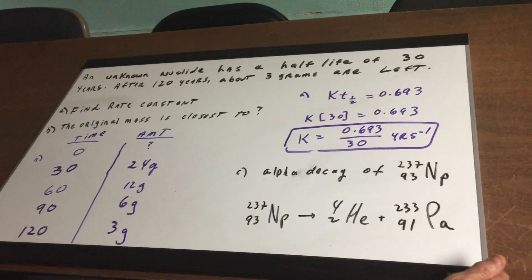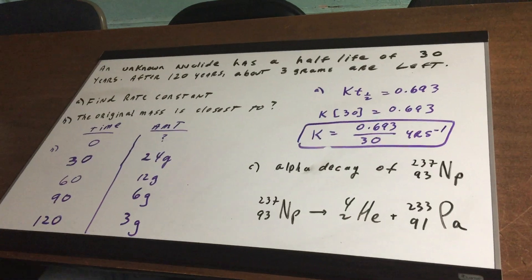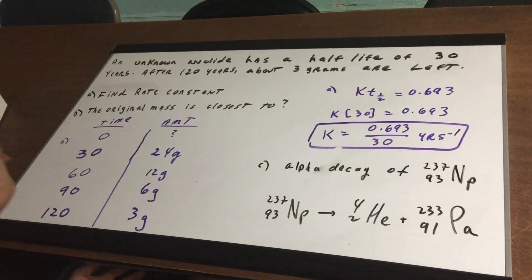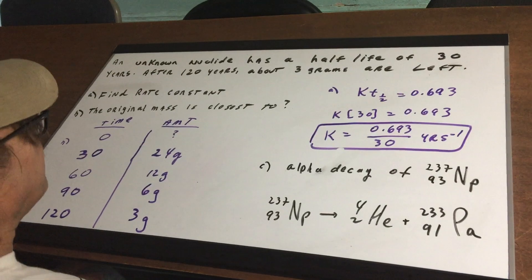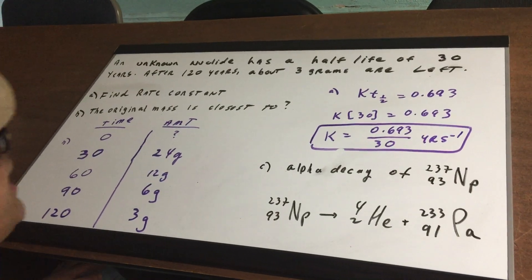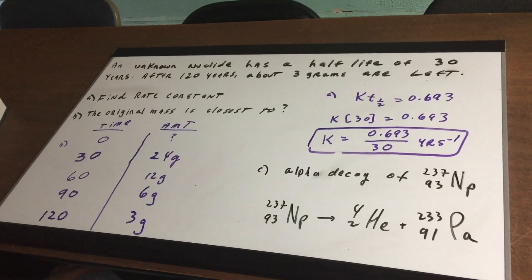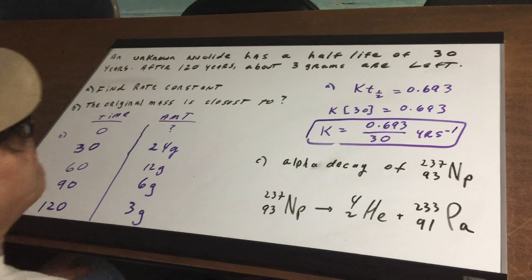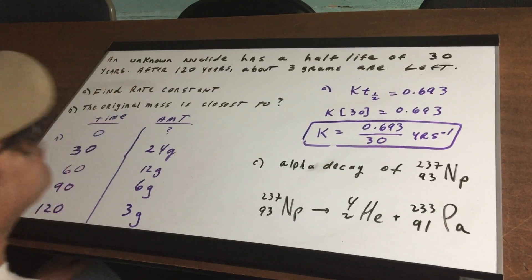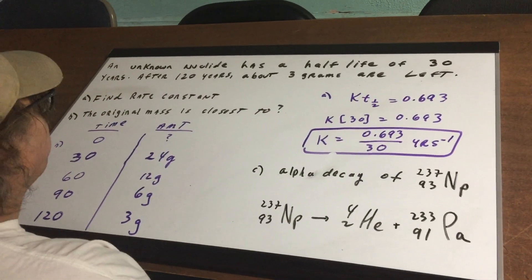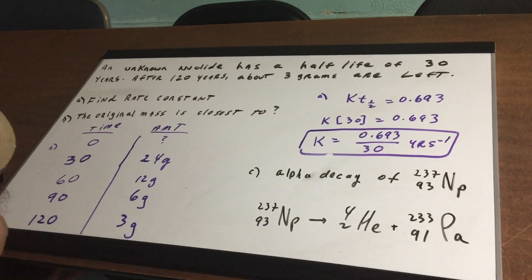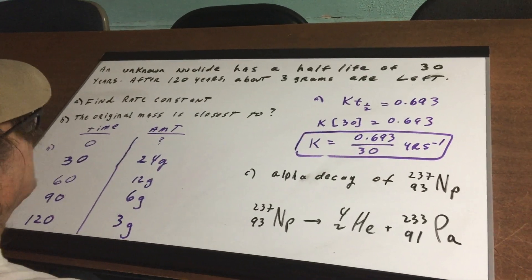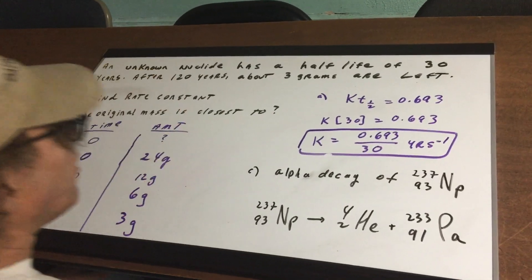These are four very standard types of questions you're going to encounter. We have an unknown nuclei — a radioactive nucleus — with a half-life of 30 years. After 120 years, about 3 grams are left. First, find the rate constant, and second, what's the original mass of the sample closest to?